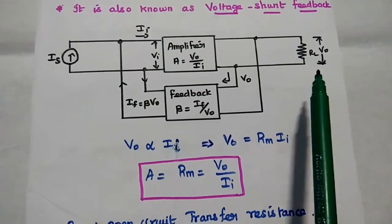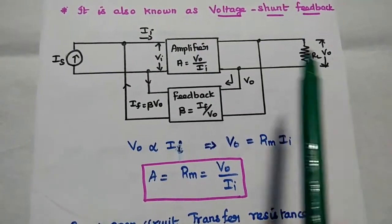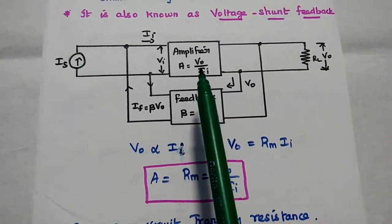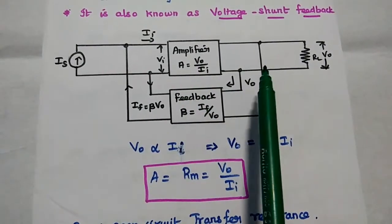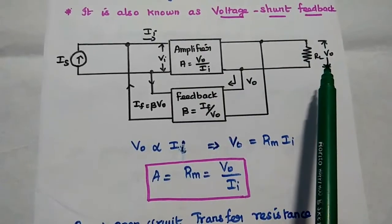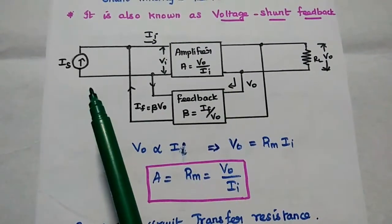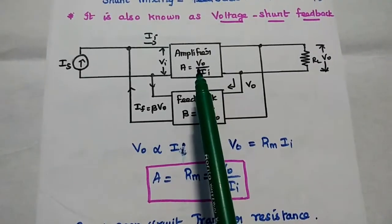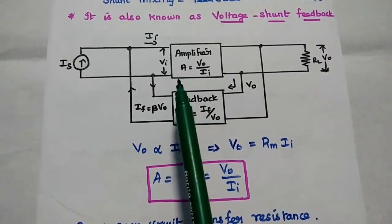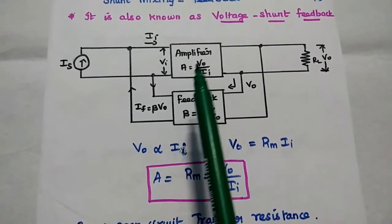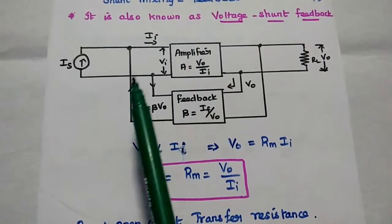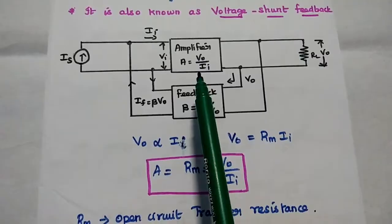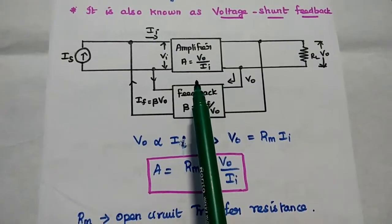The output signal is a voltage signal. The amplifier has a gain A equal to output divided by input. Here, the output is voltage VO and the input is current II — the actual input current given to the amplifier after feedback. So the gain is equal to VO divided by II.